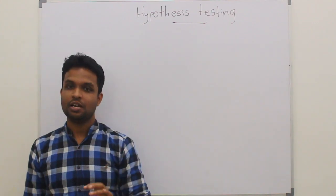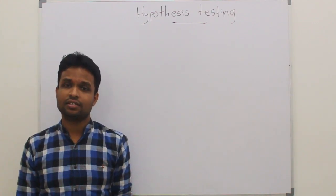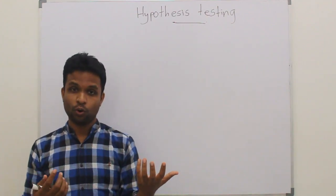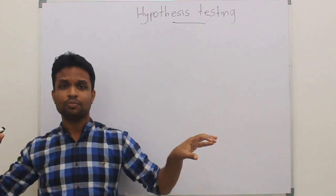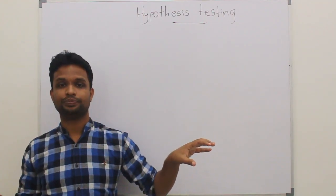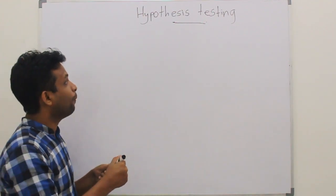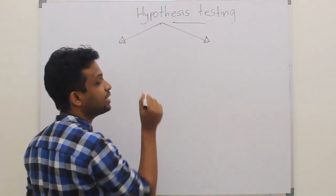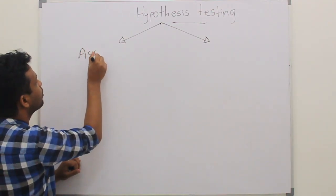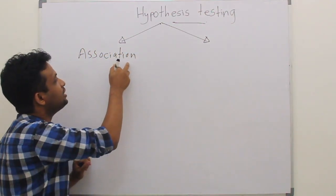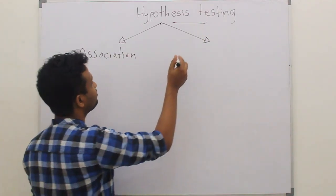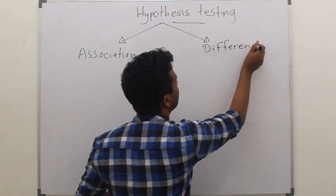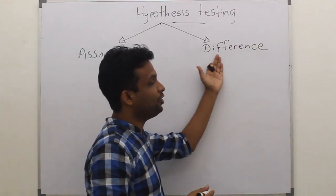In hypothesis testing, basically we are testing whether variables are associated or whether there is a difference between the variables. We can divide this into two major aspects: hypothesis of association and hypothesis of difference.